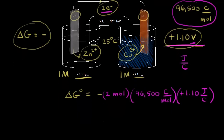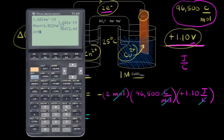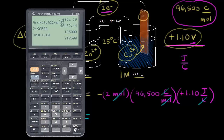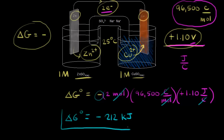Now let's do the calculation: 2 times 96,500, multiplied by 1.10, gives us 212,300 joules. Converting to kilojoules, that's 212 kilojoules. Remember the negative sign — so ΔG° = −212 kilojoules. The standard change in free energy for this voltaic cell is negative 212 kilojoules.